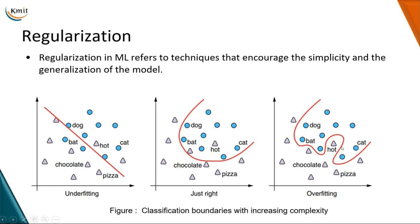If you want to make as few errors as possible, you can draw something wiggly, like in the third figure. The decision boundary doesn't make any classification errors — pot, chocolate, and pizza are out; animals like dog, bat, and carrot are put into one category. This means we have achieved 100% classification accuracy.